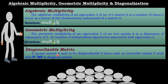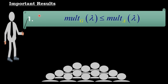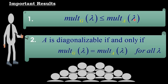A square matrix A is said to be a diagonalizable matrix if there exists an invertible matrix P such that P-inverse AP is a diagonal matrix. First result: the geometric multiplicity of lambda is always less than or equal to the algebraic multiplicity of lambda. Second result: a matrix is diagonalizable if and only if the geometric multiplicity equals the algebraic multiplicity for all eigenvalues.